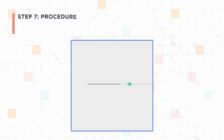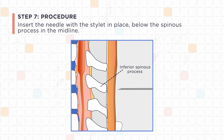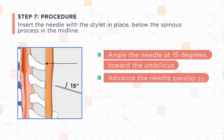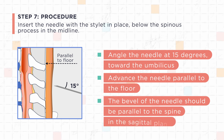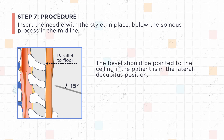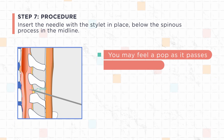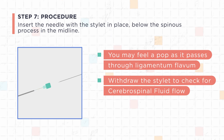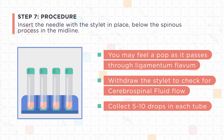Step 7: Procedure. Insert the needle with the stylet in place, below the spinous process in the midline. Angle the needle at 15 degrees toward the umbilicus. Advance the needle parallel to the floor. The bevel of the needle should be parallel to the spine in the sagittal plane — pointed to the ceiling if the patient is in the lateral decubitus position, or pointed either left or right if the patient is sitting. You may feel a pop as it passes through the ligamentum flavum. Withdraw the stylet to check for cerebrospinal fluid flow. If there is flow, collect 5 to 10 drops in each tube, unless ordering a specialized test that requires more.